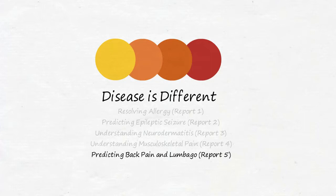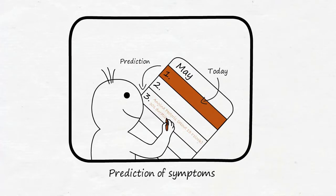In this practical part of the video series Disease is Different, we look at the exciting possibility of predicting symptoms, which makes it possible to accurately and individually validate the underlying model. This is impossible with the conventional medical model.